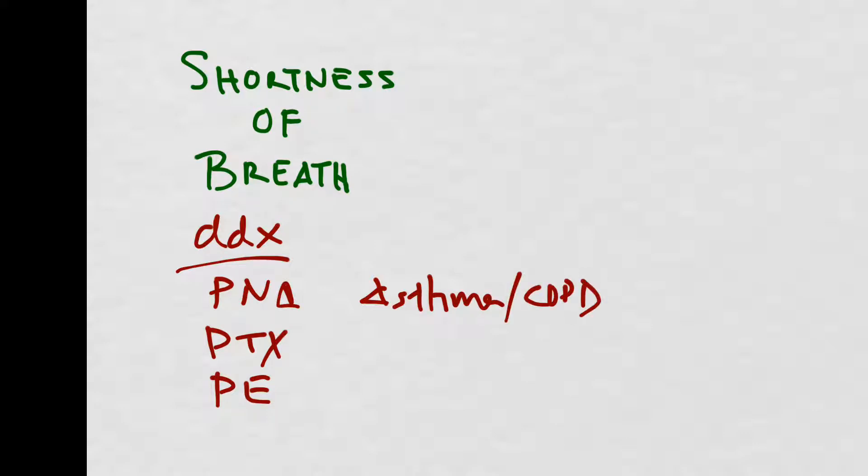As always, the first thing you need to do when you see a chief complaint is develop your critical differential diagnosis. So for shortness of breath, that would be pneumonia, pneumothorax, PE, asthma, or a COPD exacerbation, CHF exacerbation, and ACS.